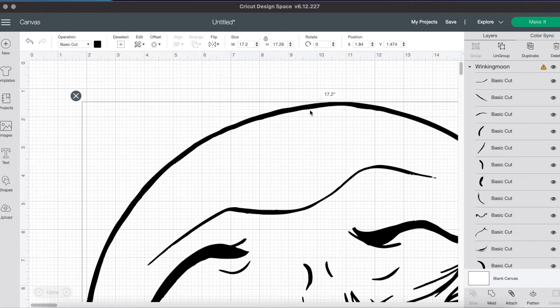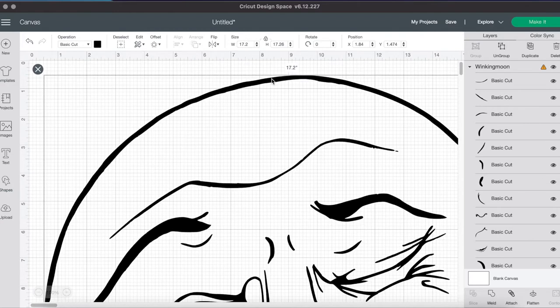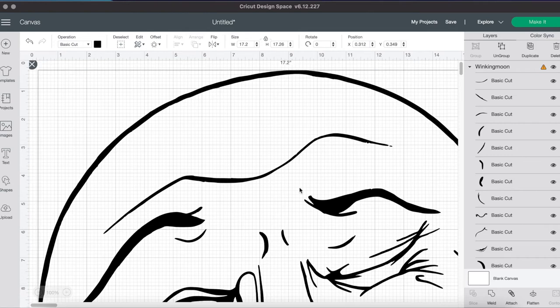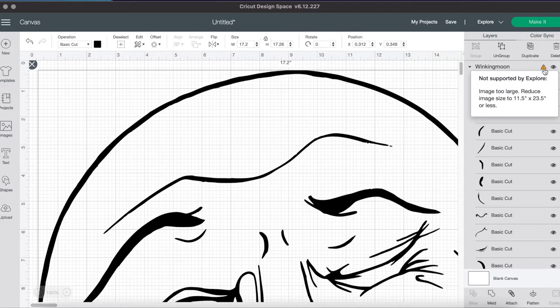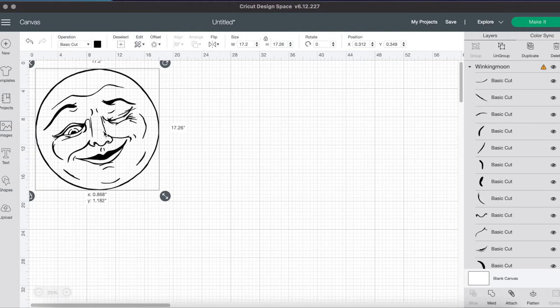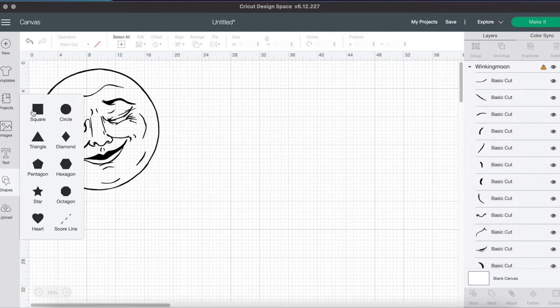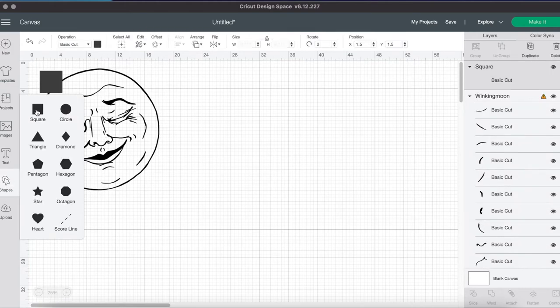Now if we look over here, it's giving us an error saying that our image is too large for my largest cutting mat. You can't do anything over 11 and a half by 23 and a half for a 12 by 24 mat. So we're going to have to cut this design and print it on two different mats.